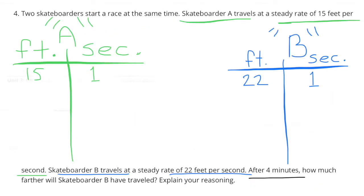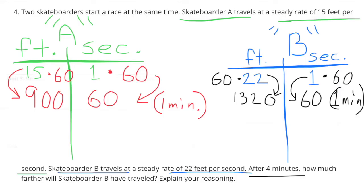Number four: two skateboarders start a race at the same time. Skateboarder A travels at a steady rate of 15 feet per second; Skateboarder B travels at a steady rate of 22 feet per second. After four minutes, how much farther will Skateboarder B have traveled? Skateboarder A: 15 feet per second; one second times 60 equals 60 seconds, or one minute; 15 times 60 is 900 feet. Skateboarder B: one second times 60 is one minute; 22 times 60 is 1320 feet.